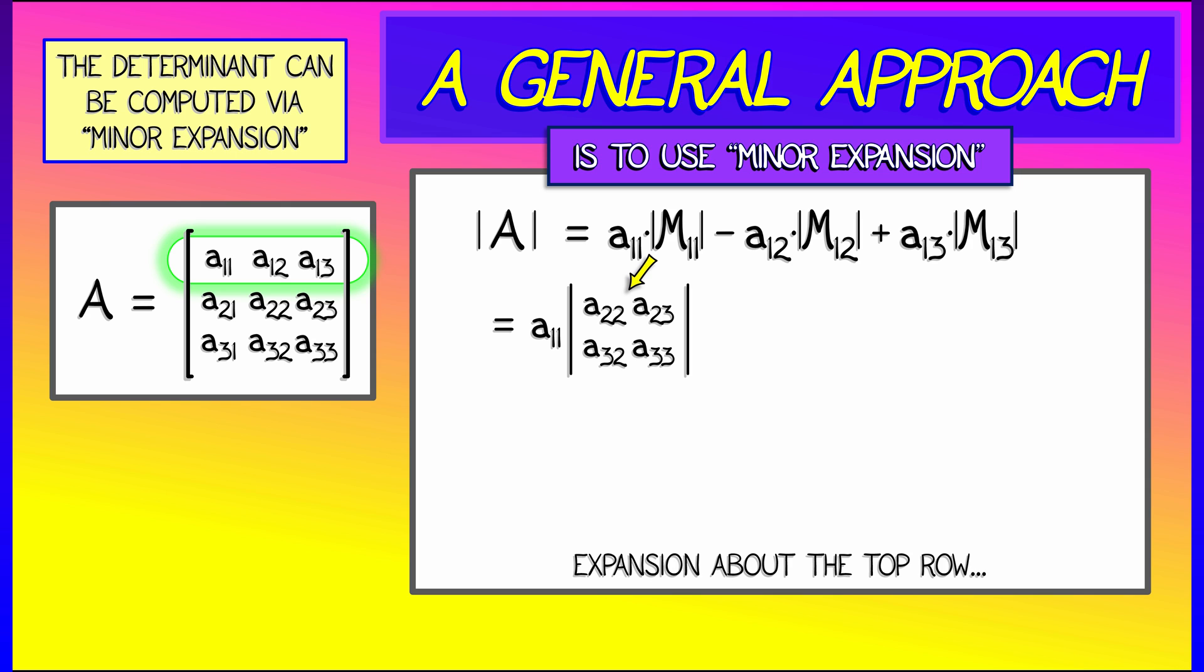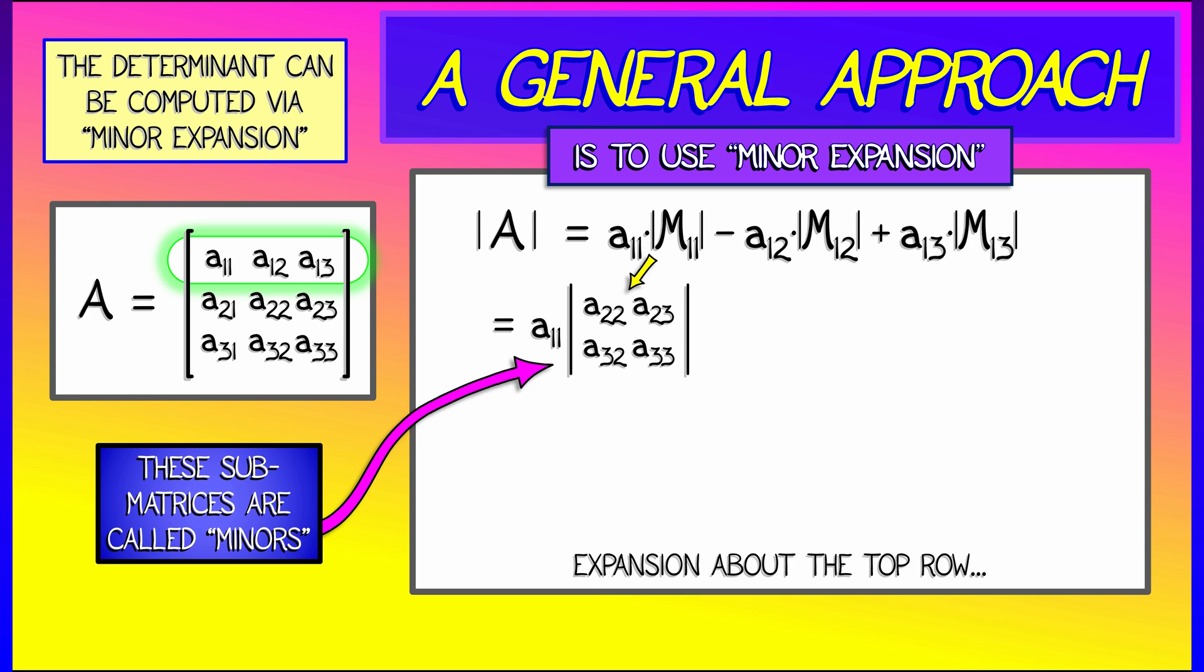A22, A23, A32, A33. These sub-matrices are called minors.